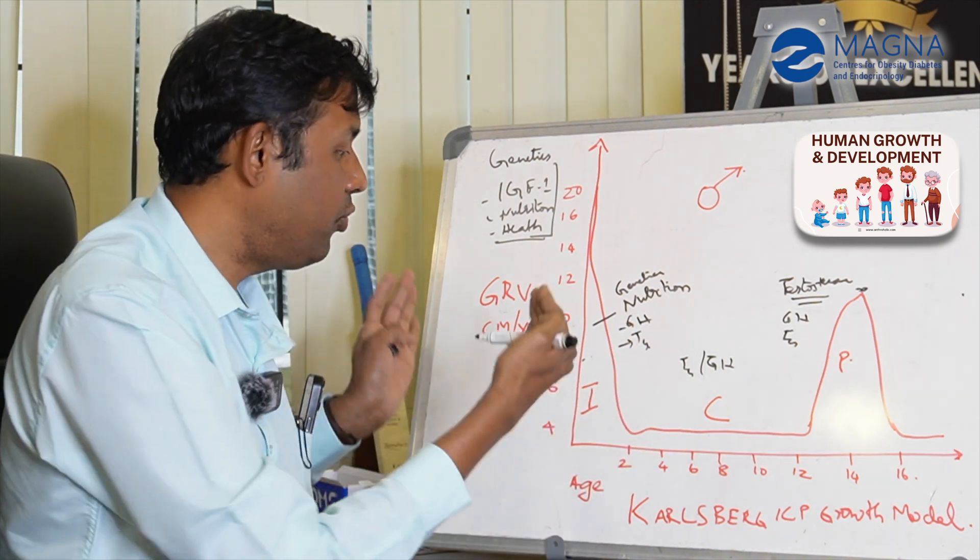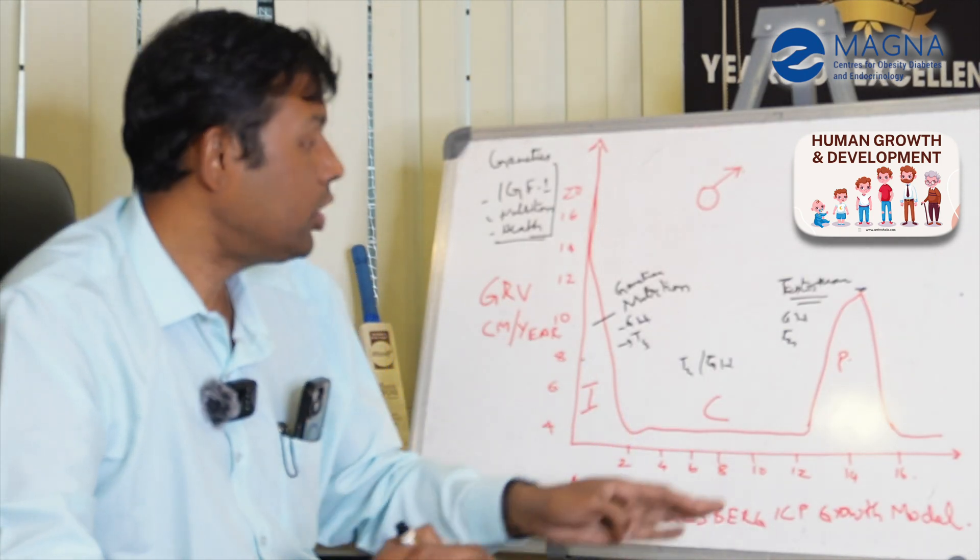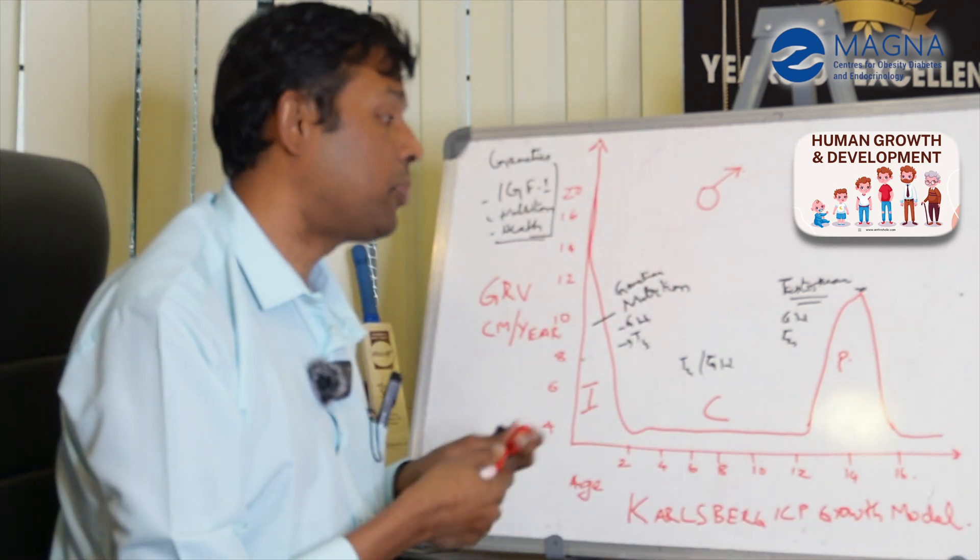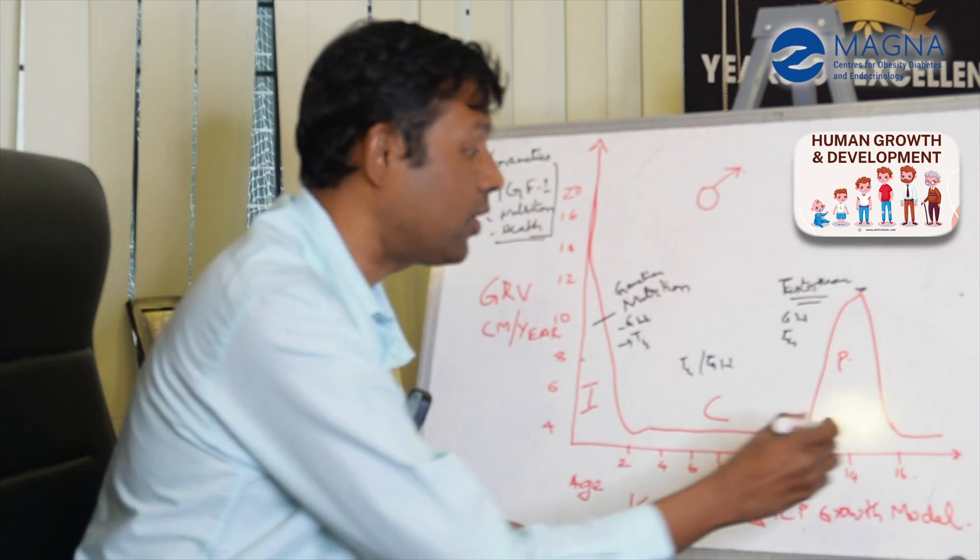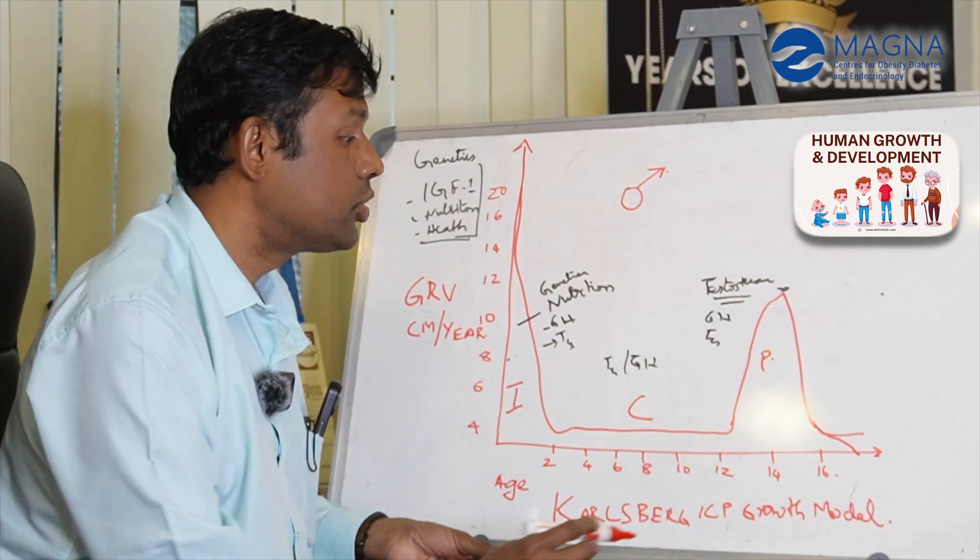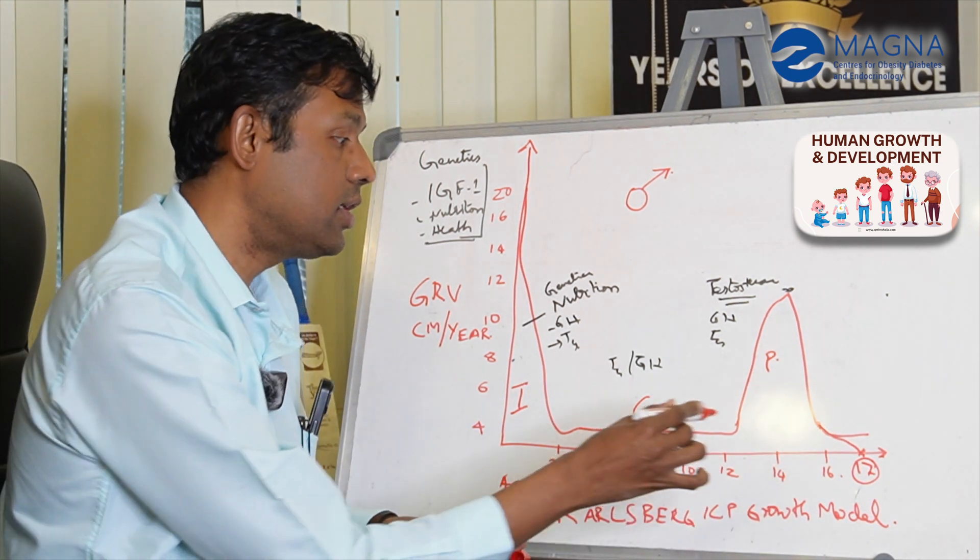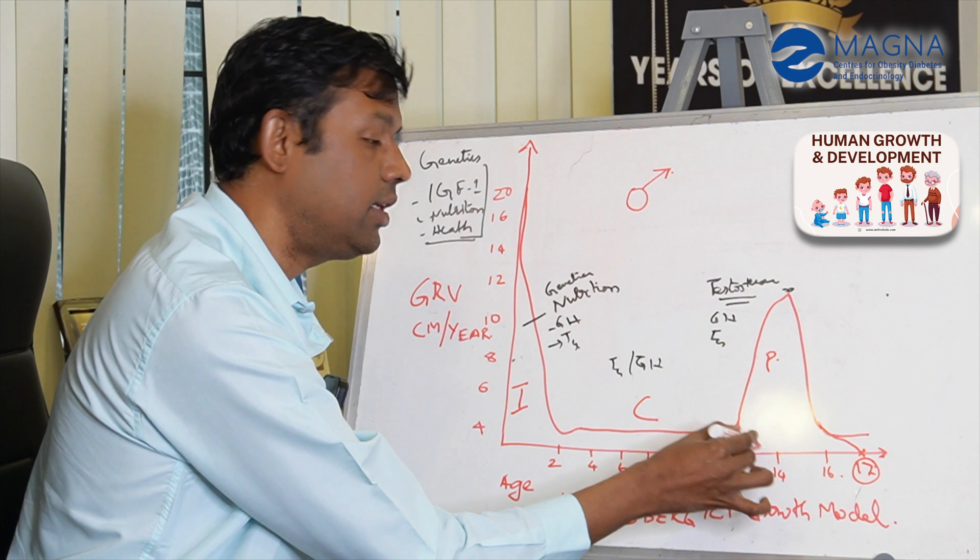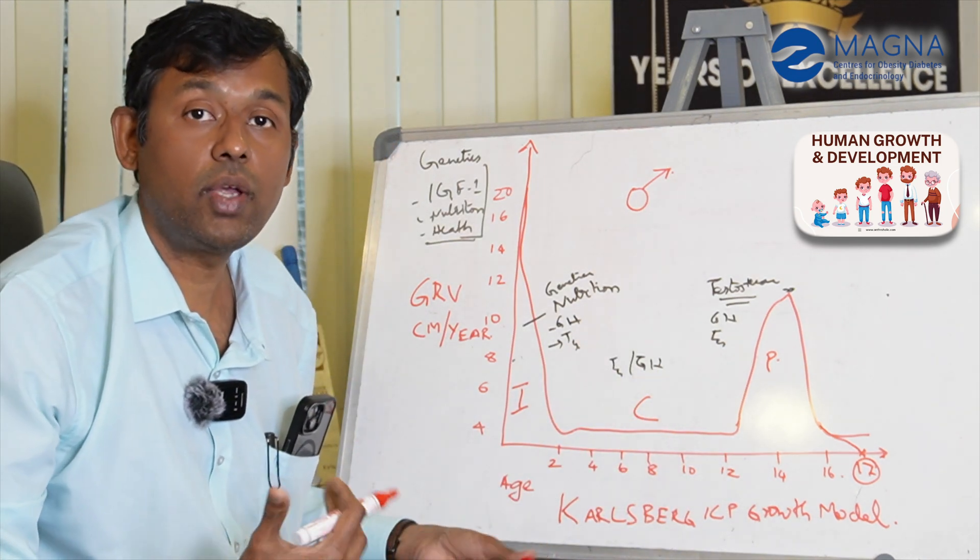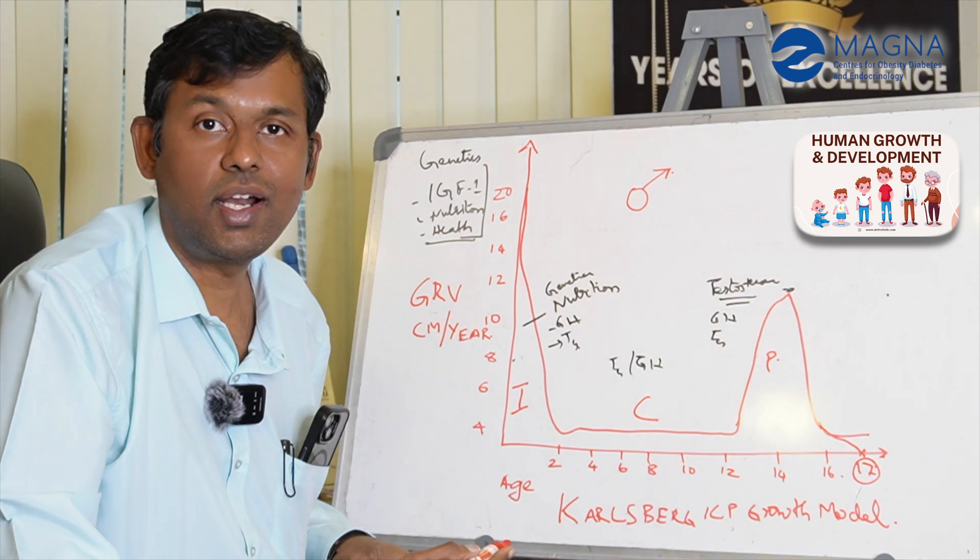This is the Carlsberg ICP growth model. The growth velocity of a human being changes. The most popular question: can I keep growing till I am 20-24? The answer is that this does not continue at 4 centimeters - it actually comes down and it stops here. After about 17 years, there is no growth. The velocity becomes zero. In girls, velocity becomes zero even as early as 13 or 14 years. So please, if you are 20 or 21 years, don't think that you can actually grow, because growth stops at some point.